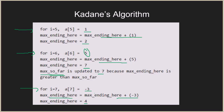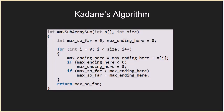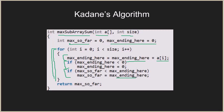We have traversed the whole array and found that max_so_far is seven, which is the maximum sum achievable. Looking at the code: the function max_subarray_sum takes the array and its size, initializes max_so_far and max_ending_here to zero, then traverses the array, adding each element to max_ending_here. If max_ending_here is less than zero, we reset it to zero. If max_so_far is less than max_ending_here, we update max_so_far. Finally we return max_so_far.